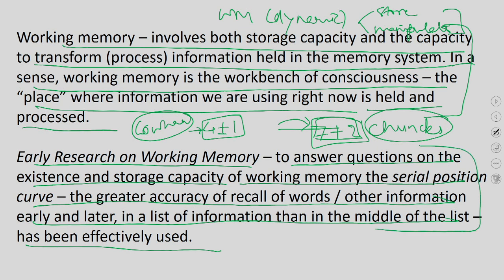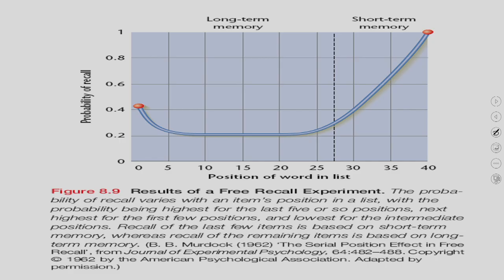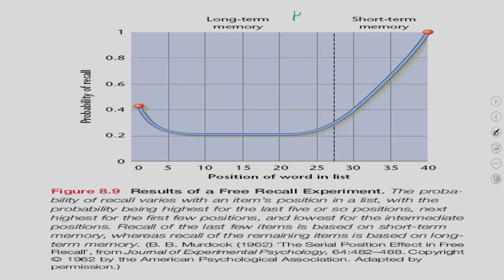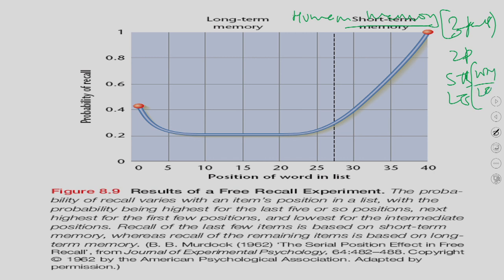The question of how many items are stored in working memory is addressed by the serial position curve. Psychologists used this to find out that human memory is a two- or three-part store. In the serial position curve experiment, a list of 40 or 50 items is given to learn, and after a break the participant must recall the list.